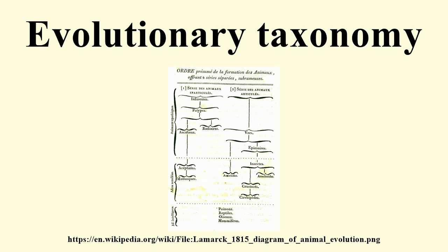Cladistic analysis groups taxa by shared traits but incorporates a dichotomous branching model borrowed from phonetics. It is essentially a simplified dichotomous natural key, although reversals are tolerated. The problem, of course, is that evolution is not necessarily dichotomous. An ancestral taxon generating two or more descendants requires a longer, less parsimonious tree. This is why a tree based solely on shared traits is not called an evolutionary tree but merely a cladistic tree. This tree reflects evolutionary relationships through trait transformations but ignores relationships made by species-level transformation of extant taxa.